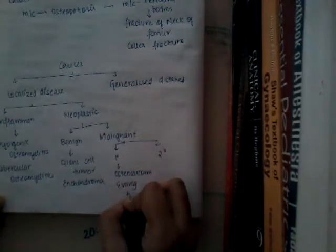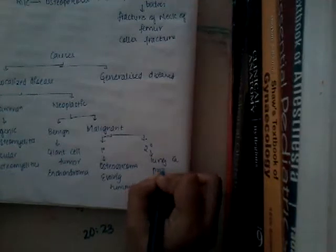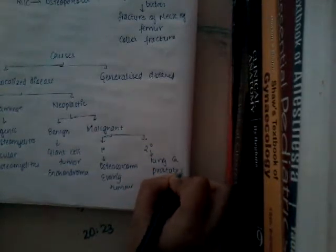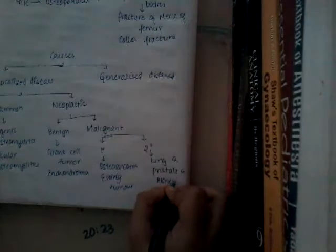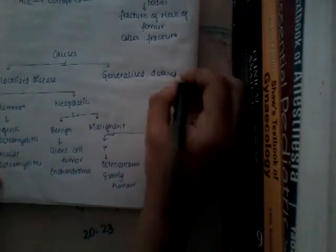If it is secondary malignancy, it can be due to lung cancer, prostate cancer, kidney cancer, breast cancer, or any genital cancer like ovarian cancer. All these may cause secondaries leading to localized disease which may predispose bone to fractures. Now let us learn about the generalized diseases which cause fractures.